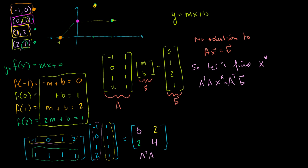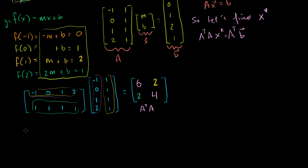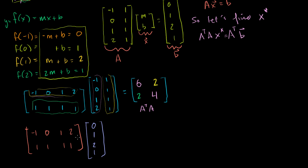Now let's figure out what A transpose b looks like. A transpose is the same matrix: first row [-1, 0, 1, 2], second row [1, 1, 1, 1]. And the vector b is [0, 1, 2, 1]. We have a 2 by 4 times a 4 by 1, so we get a 2 by 1 matrix. First entry: (-1)(0) + (0)(1) + (1)(2) + (2)(1) = 0 + 0 + 2 + 2 = 4. Second entry: (1)(0) + (1)(1) + (1)(2) + (1)(1) = 0 + 1 + 2 + 1 = 4. So A transpose b equals [4, 4].